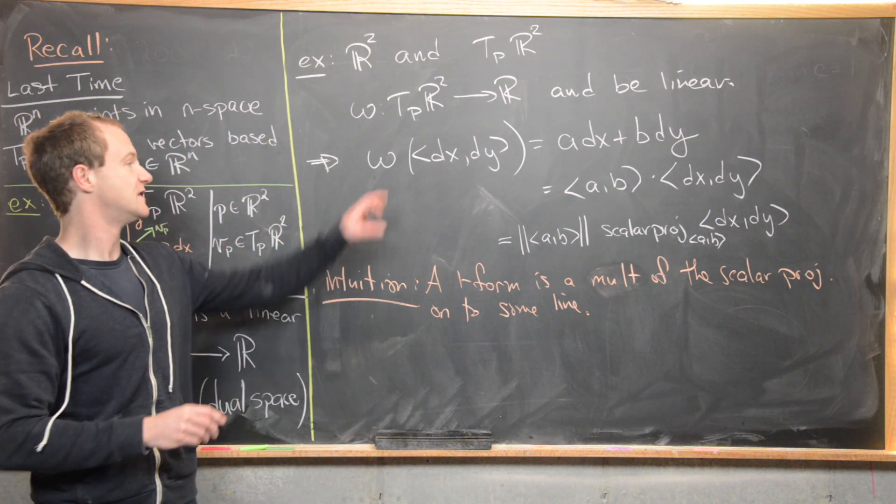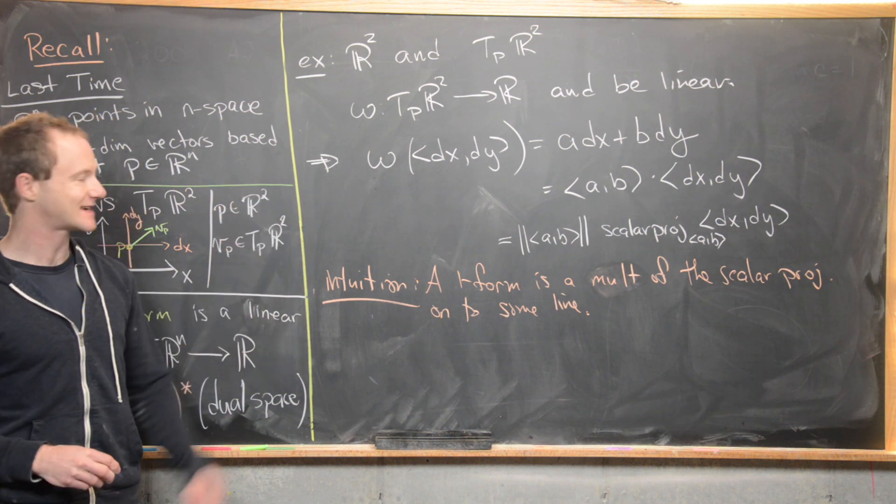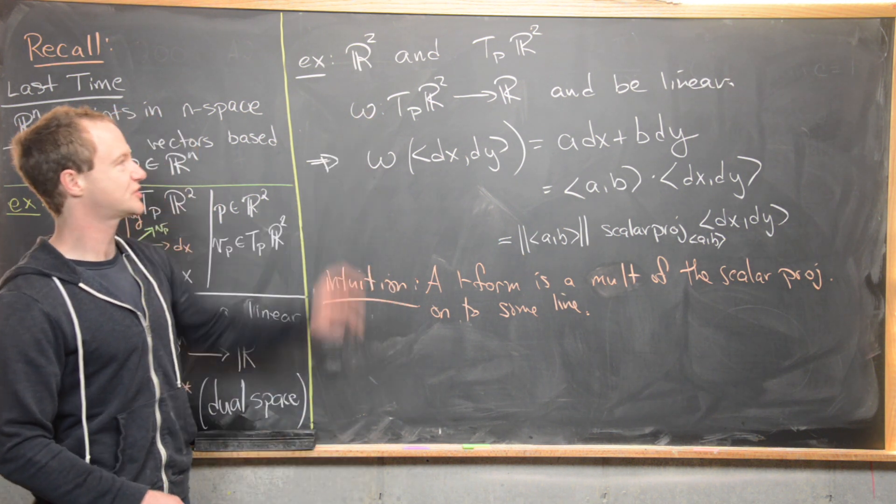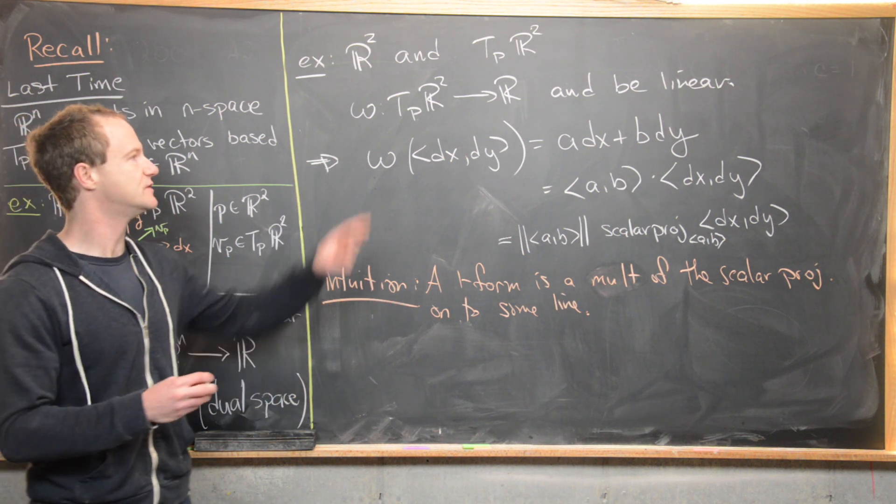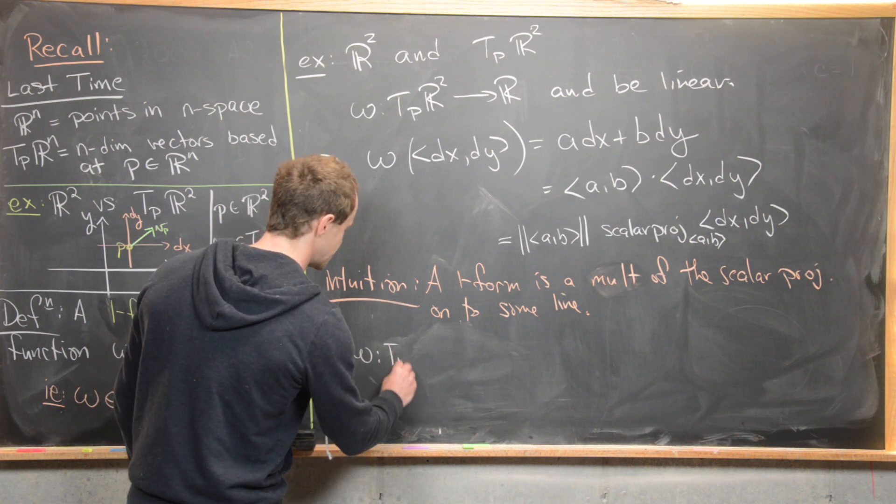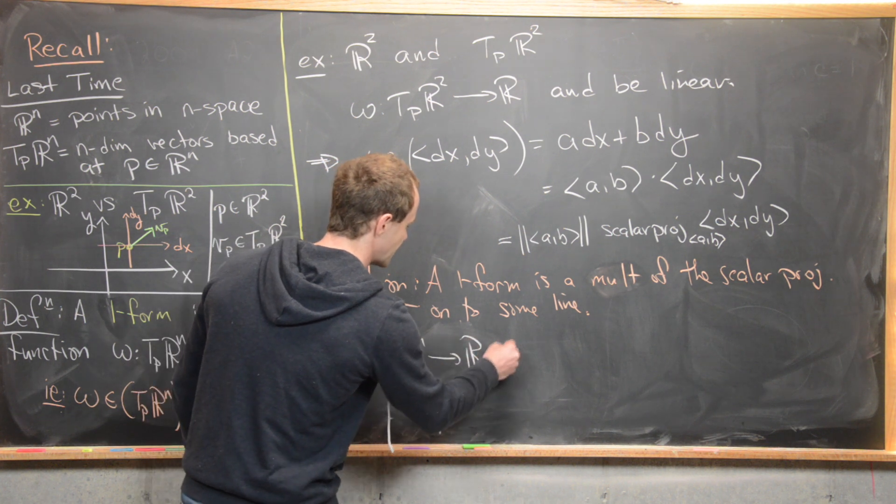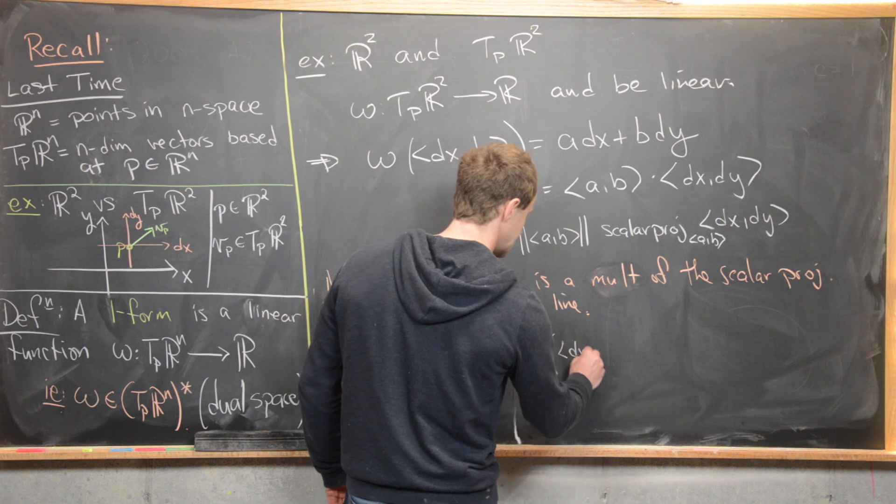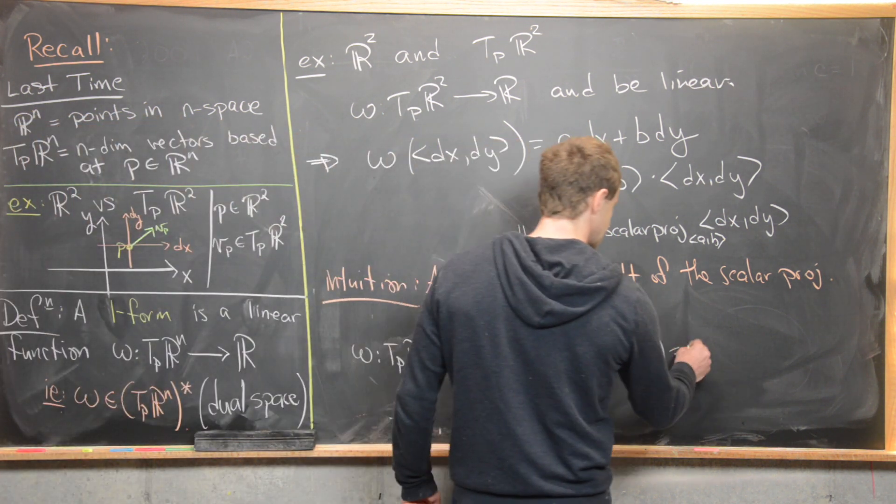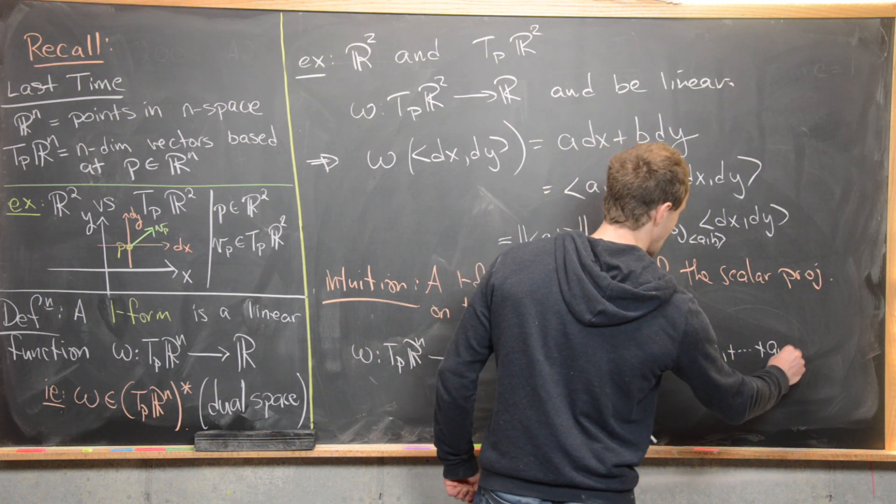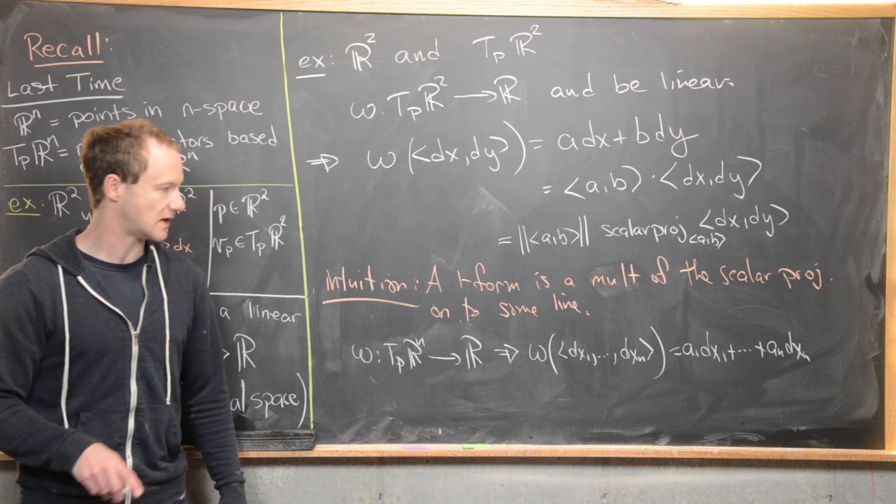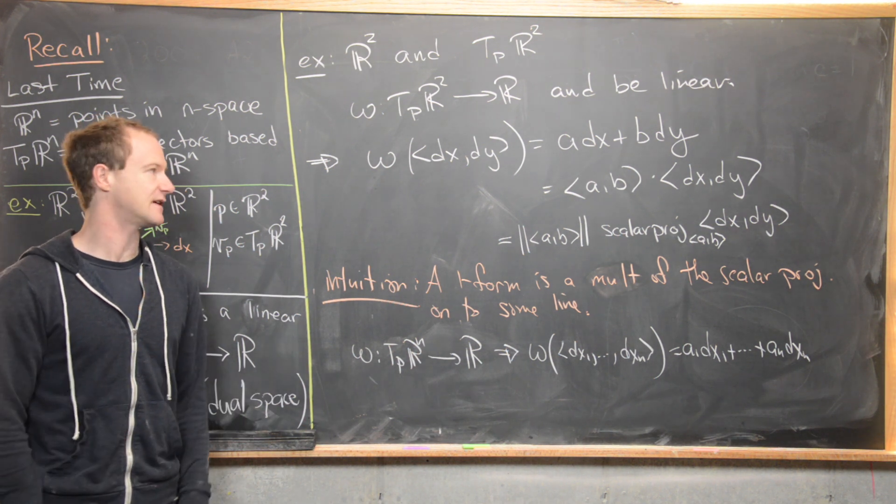So in other words, the intuition here is that a one-form is a multiple of the scalar projection onto some line. In some ways, this one-form is defined by this vector, and what's happening is you're just projecting onto that line. Now that we have an intuitive feel of what this one-form is in terms of a scalar projection, let's push this up to a one-form on T_p R^n using the fact that it still needs to be a linear function from this tangent space up to R. So let's say omega goes from T_p R^n all the way up to R. The fact that it's linear means that when we take omega and attack (dx_1, ..., dx_n), that's just going to give us this sum a_1 dx_1 all the way up to a_n dx_n. You can think about that in the same way: you're projecting onto a line in n-dimensional space, and then you're scaling that projection.